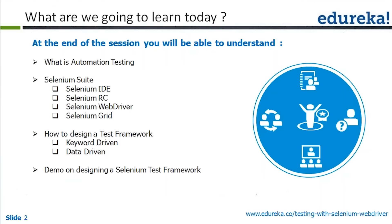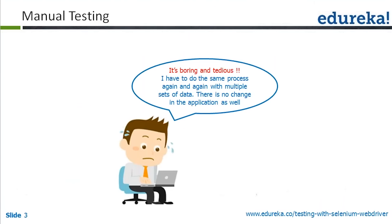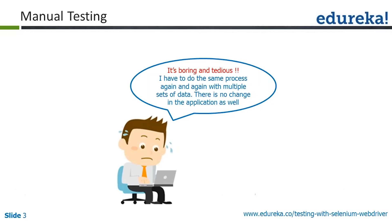Let us begin with the concept of manual testing. Manual testing is when we validate and verify that an application has been designed as per the specification and all the functional parts are working correctly. But most of the time you have to repeat the same set of tests again and again — for example, regression tests, which you execute with each new build. There is also data-driven testing, where you test the same screens with different data — both are tedious tasks.